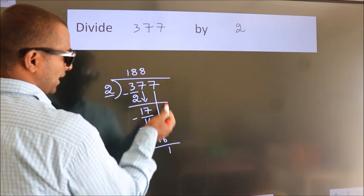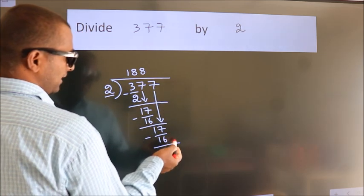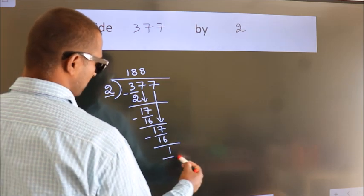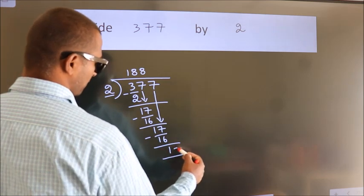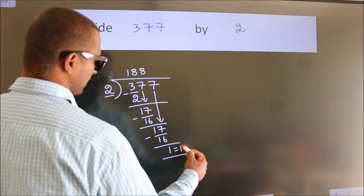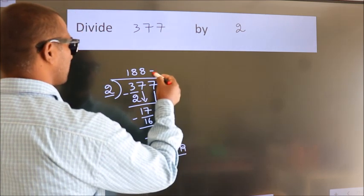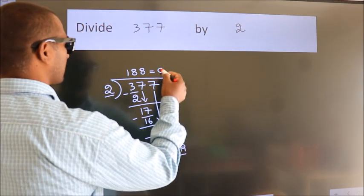No more numbers to bring down, so we stop here. This is our remainder and this is our quotient.